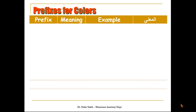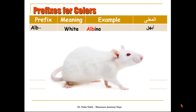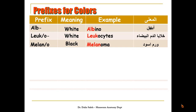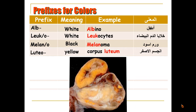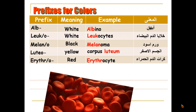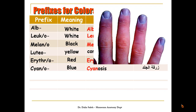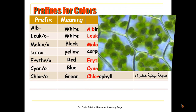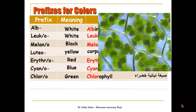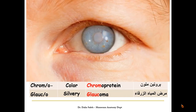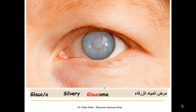Prefixes used for colors: 'Albo' means white, as in 'albino'. 'Leuko' means white also, as in 'leukocyte'. 'Melano' means black, as in 'melanoma'. 'Luteo' means yellow, as in 'corpus luteum'. 'Erythro' means red, as in 'erythrocyte'. 'Cyano' means blue, as in 'cyanosis'. 'Chloro' means green, as in 'chlorophyll'. 'Chromo' means color, as in 'chromoprotein'. 'Glauco' means gray or greenish-gray, as in 'glaucoma'.